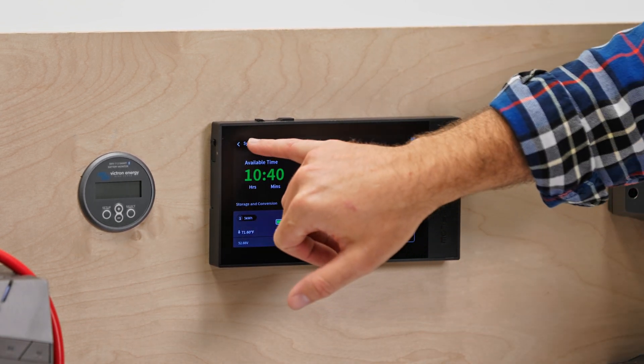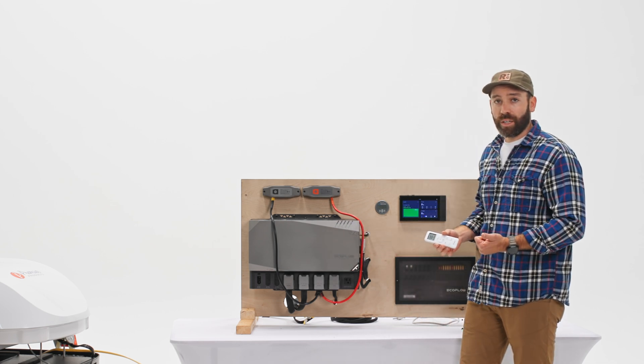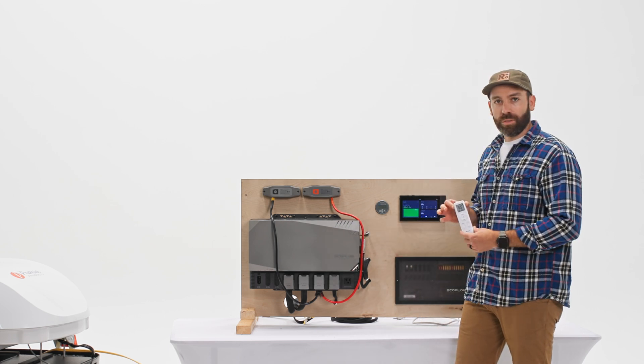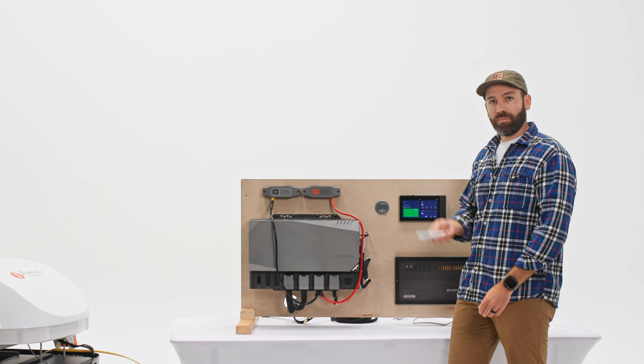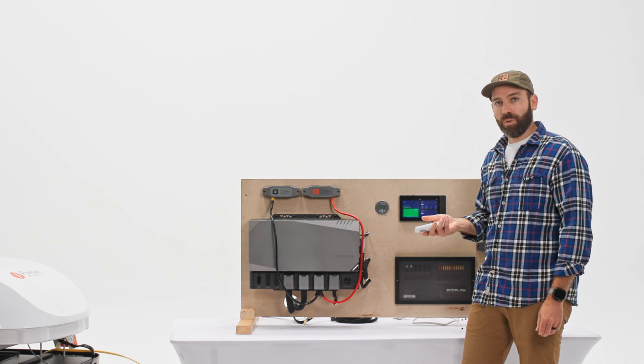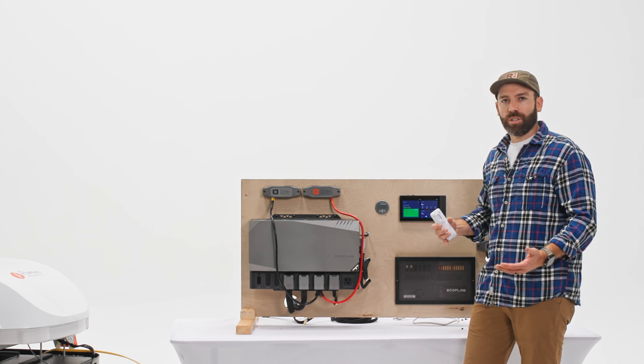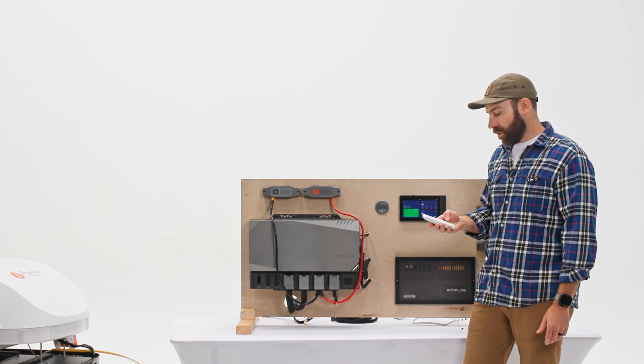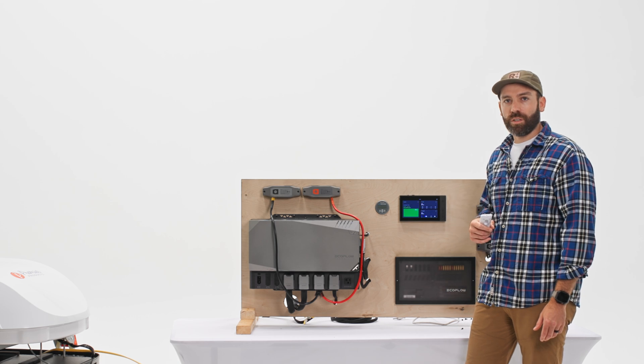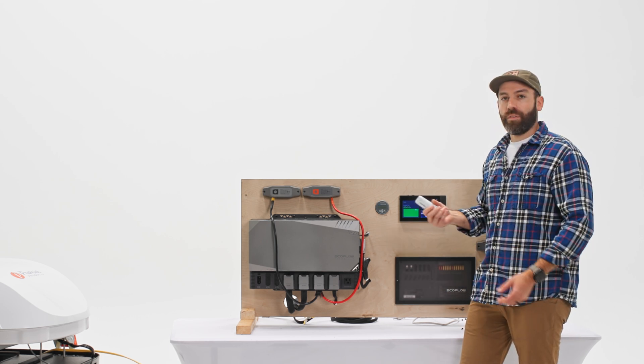So two of my favorite features on this unit is going to be that Wi-Fi connectivity and then also the remote. To be able to just sit in bed, turn it on, turn it off, change the temperature, change the mode - keeping this next to your bed. So if you wake up and it's a little chilly in the morning, you can easily switch this mode over to heating and run that heat pump for a short period of time, just to warm the van up a little bit.